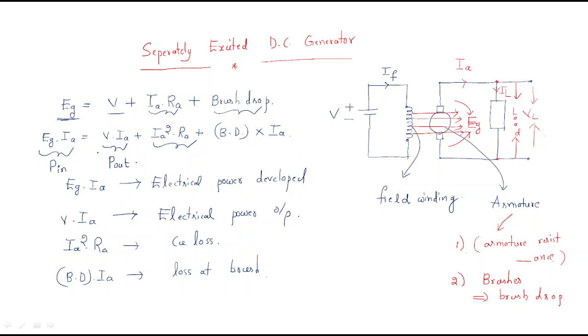We can give some relation using this. Generally, brush drop is neglected compared with all the voltages, because the brush drop value is less. The input generated by the generator reaches the output and also combines with the armature losses, then it accounts for the brush drop. Finally we can write the equation.